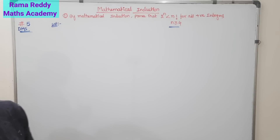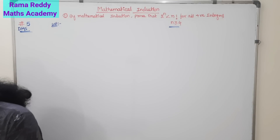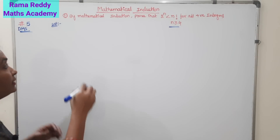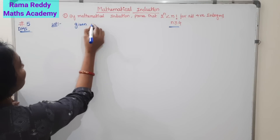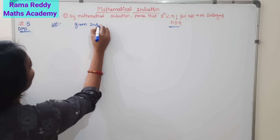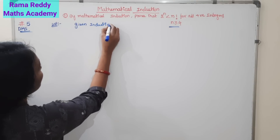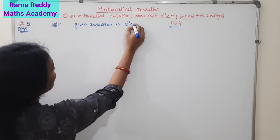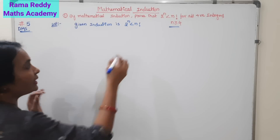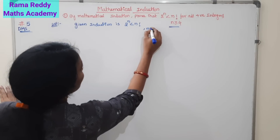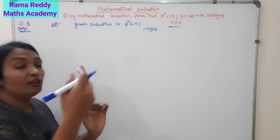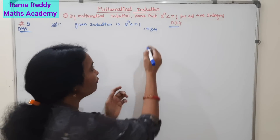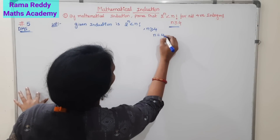What is our given statement? The given induction statement is: 2 power n is less than n factorial. The initial value here is n naught equal to 4, since n is greater than or equal to 4. It may be 4, 5, and so on.